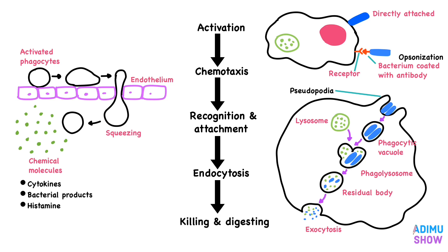After killing and digesting the pathogens, neutrophils die. Dead neutrophils and cellular debris form pus at the site of infection.